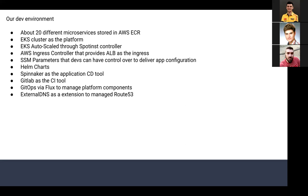There is an entry point script that exports environment variables from SSM parameters to the Spring Boot Java application. For Kubernetes, we use Helm charts — this is the code for all of our Kubernetes manifests. As a continuous delivery and deployment tool, we use Spinnaker, which is one of the main actors in this story. For CI we use GitLab, which is how we build and push Docker images to ECR. For third-party platform component tools, we use Flux. One quite important thing in this story is External DNS, which I will explain later on.